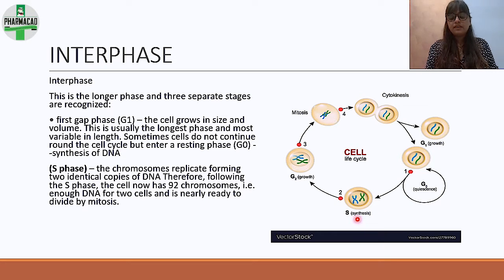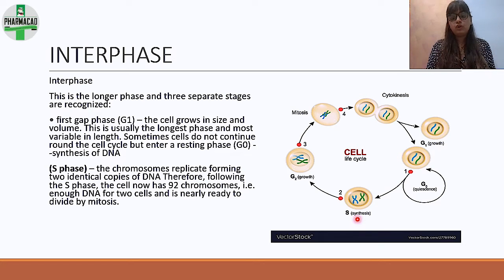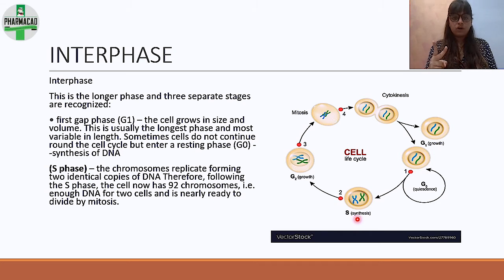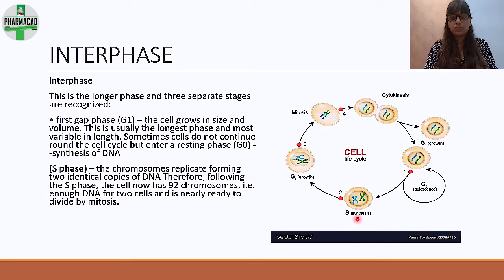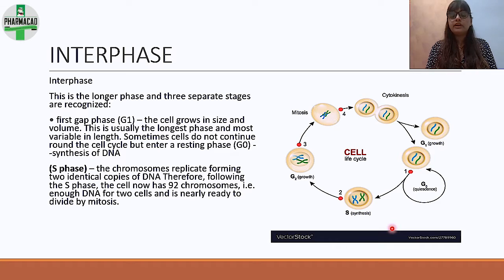The next phase is the S phase, or synthesis phase. As the name suggests, DNA is synthesized — chromosomes replicate, forming two identical copies. We start with 46 chromosomes and they double to 92 in the S phase, providing enough DNA for two cells, making the cell nearly ready to divide by mitosis.